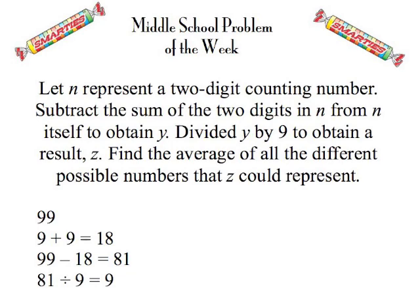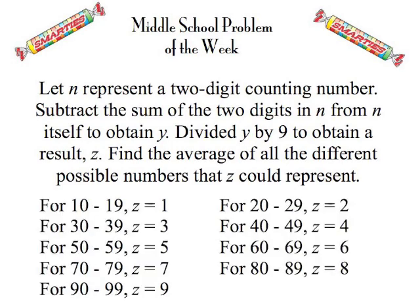Divided by 9 and got 1. And then let's try it with the largest two-digit number. Add the digits, get 18. Subtract from 99 and get 81. Divide by 9 and get 9. And then you perhaps experimented with some other numbers and perhaps saw the same pattern that the Problem of the Week staff saw.